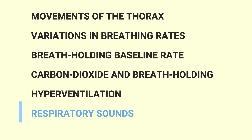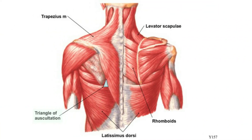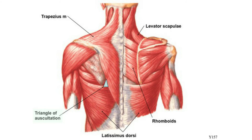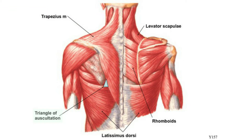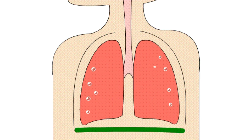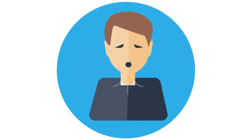Breathing produces respiratory sounds. When you put the stethoscope on the inferior part of the larynx, you can hear the tracheal and bronchial sounds. Ideally, the stethoscope must be placed on the triangle of auscultation, found at the inferior part of the scapula, because at this area there is less blockage of sound waves since the thoracic cage is not covered with muscles. A smooth flow of air in and out of our lungs indicates healthy lungs, while a wheezing or rattling sound signifies a congested lung.